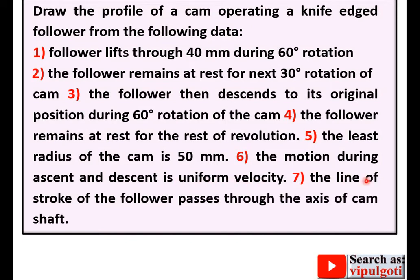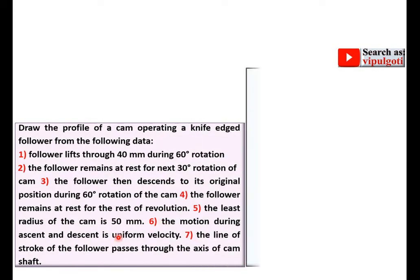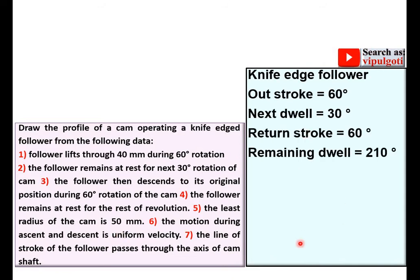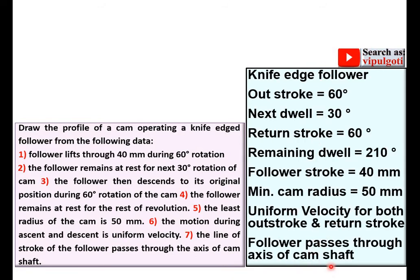Very important point: the line of stroke of the follower passes through the axis of the cam shaft. Now let's see how to draw the displacement diagram and the cam profile. The important point is about 210 degrees — that is 360 minus 60 minus 30 minus 60 — so the remaining dwell period is 210 degrees. Now let's start from the displacement diagram.